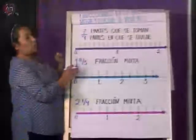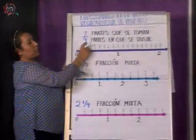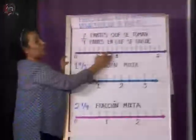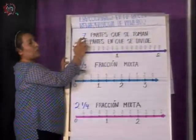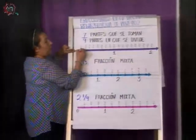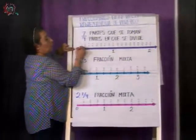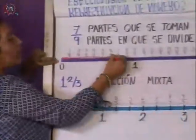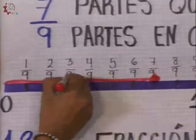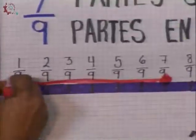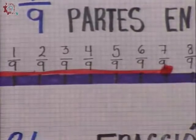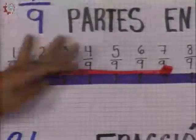Entonces, procedo como el ejemplo anterior. Para siete novenos, voy a dividir en nueve partes, pero solamente voy a tomar siete. Igual, a partir de ahí, si yo tomo mis líneas, en ese punto es donde yo tengo localizada mi fracción siete novenos.